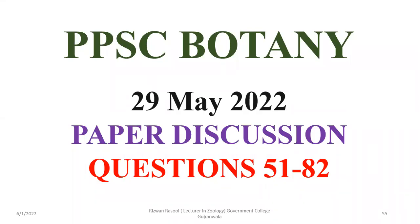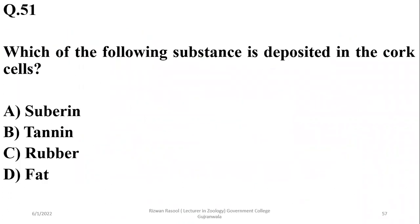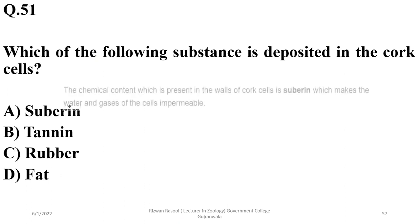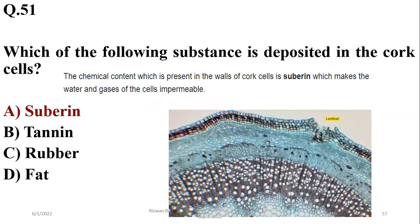The remaining questions of the PPSC Botany paper, question number 51 to 82. Let's move to question number 51. Which of the following substances is deposited in the casparian cells? It is actually a waxy substance, suberin. So the right option is alpha.